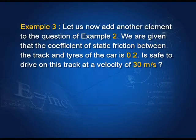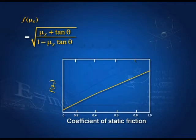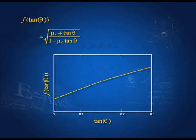The addition of friction has increased safety on the road — friction adds to safety. That is why tire companies spend so much money advertising how their tires increase friction. I have plotted this function: F as a function of the coefficient of friction, and you can see that as the coefficient of friction increases, the safe speed increases. Similarly, as tanθ increases, the safe speed increases.